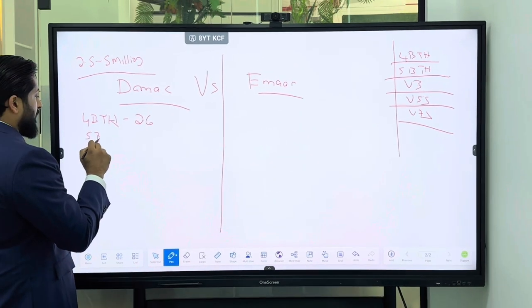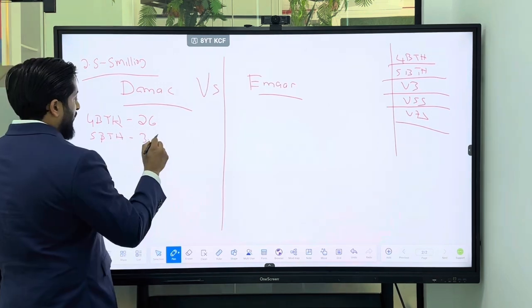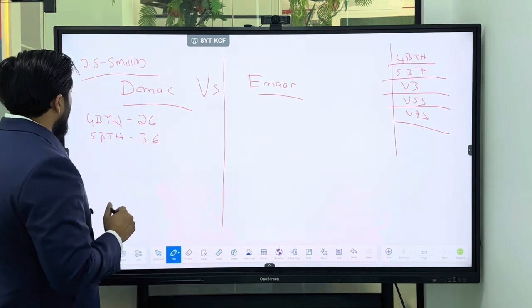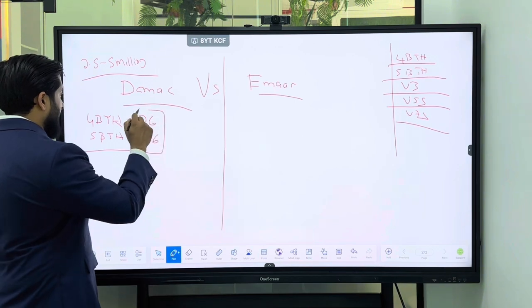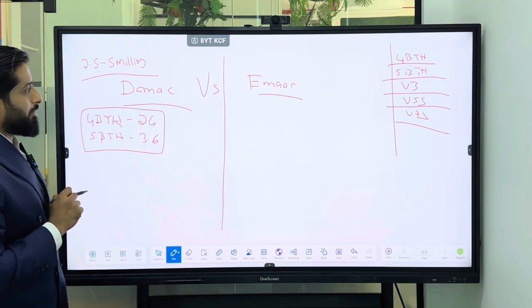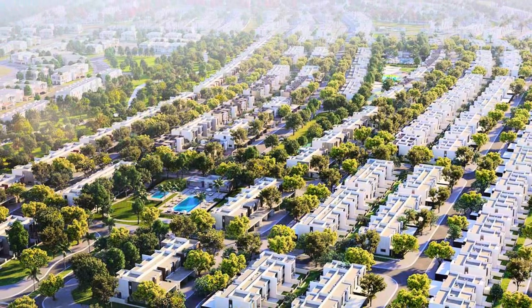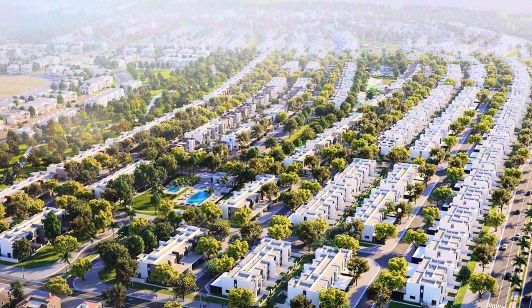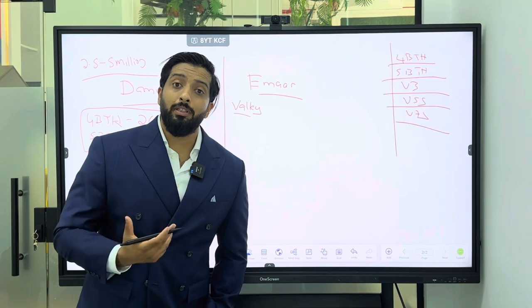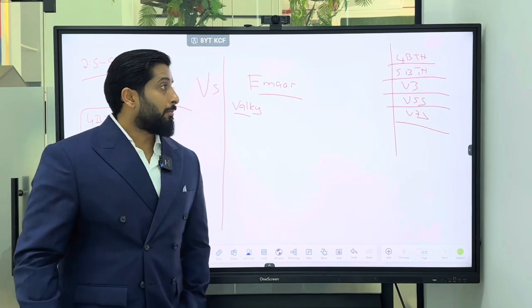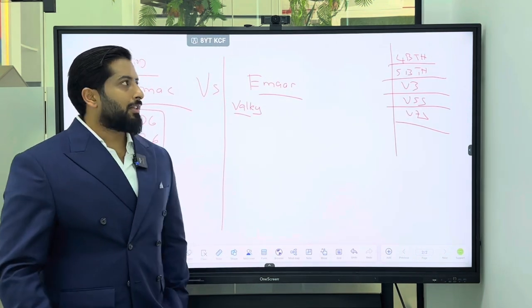Let's first start with Damak versus Emar. A four-bed townhouse is 2.6 and a five-bed townhouse we're looking at the price of 3.6. In this bracket what do we have at Emar? We have The Valley. Beautiful - I love Valley, I've invested in Valley. That's how much I believe in it. Valley is going to be the next Dubai Hills, but investment is all about timing, right?